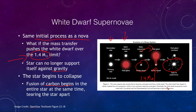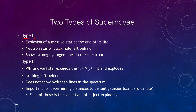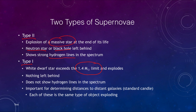That rips the star apart, causing a massive explosion we call a Type 1 supernova. This differentiates it from the Type 2 supernova, which is when a very massive star reaches the end of its life and forms iron in its core. The white dwarf is right at the limit of 1.4 solar masses, and if pushed over that limit, it cannot survive. So we have these two types of supernovae.